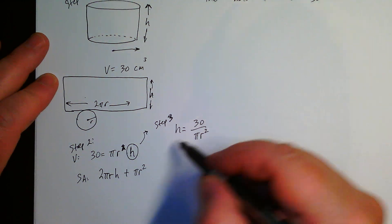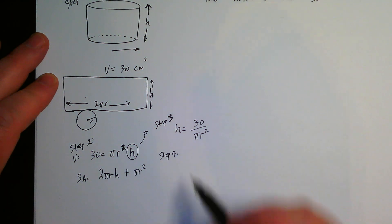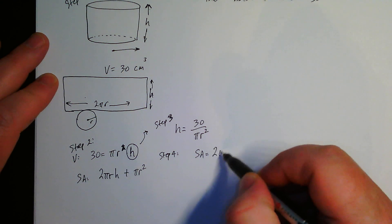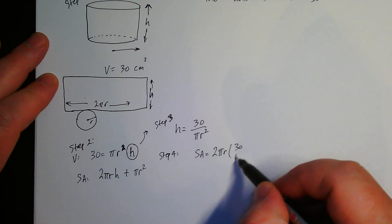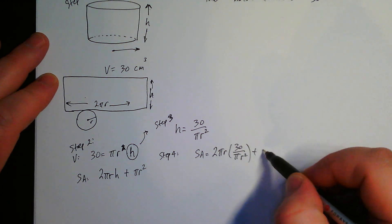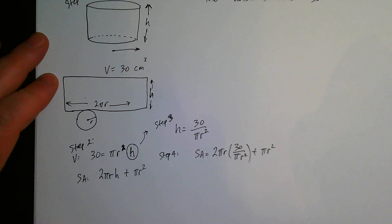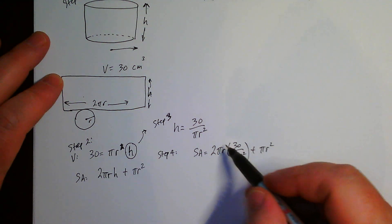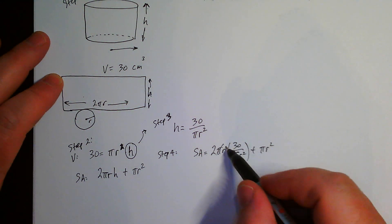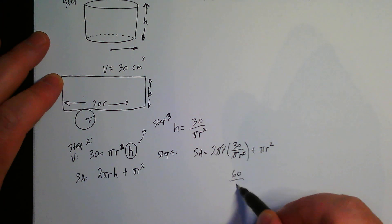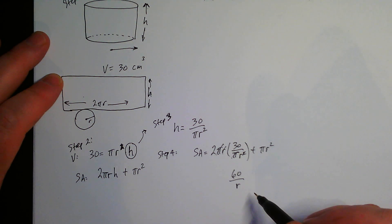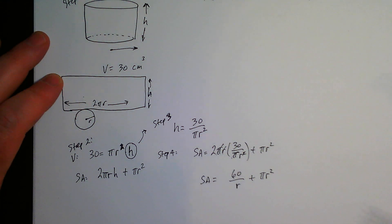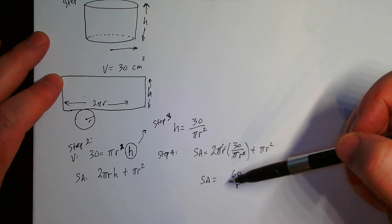Step 4 is to substitute that value into the surface area formula. So the surface area equals 2πr times 30 over πr² plus πr². The π's reduce and simplify, giving us 60 over r plus πr². That's our nice surface area formula in one variable.